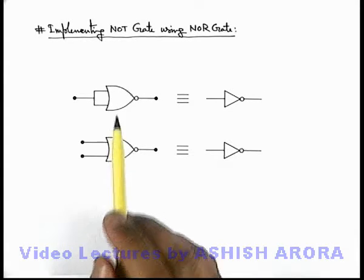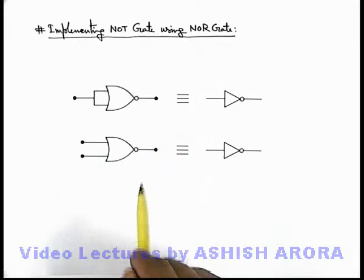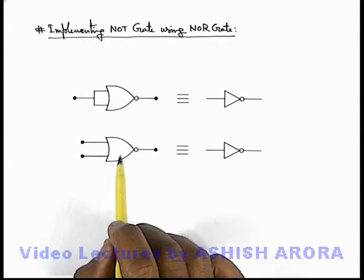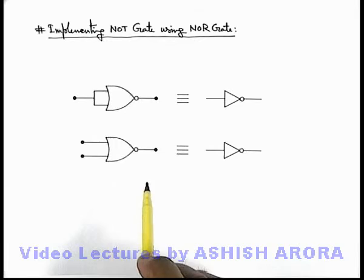Let us now understand the implementation of NOT gate using NOR gates. There are two ways, similar to NAND gates, by which we can implement a NOT gate.